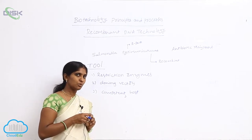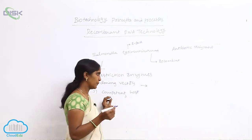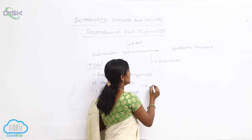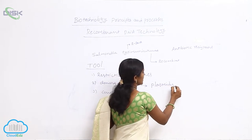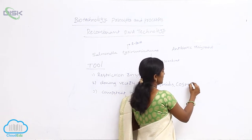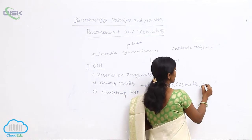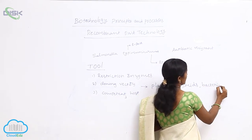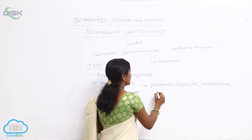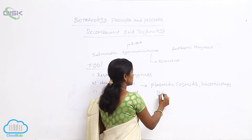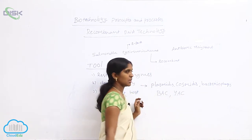Many cloning vectors are used. Generally, the cloning vectors are originated from prokaryotic cells, so they are plasmids. Commonly used genetic vectors are plasmids, bacteriophages, and cosmids. Cosmids have the cos sites of the phage. Bacteriophages are also used as cloning vectors. Bacterial artificial chromosomes and yeast artificial chromosomes are also used as cloning vectors.